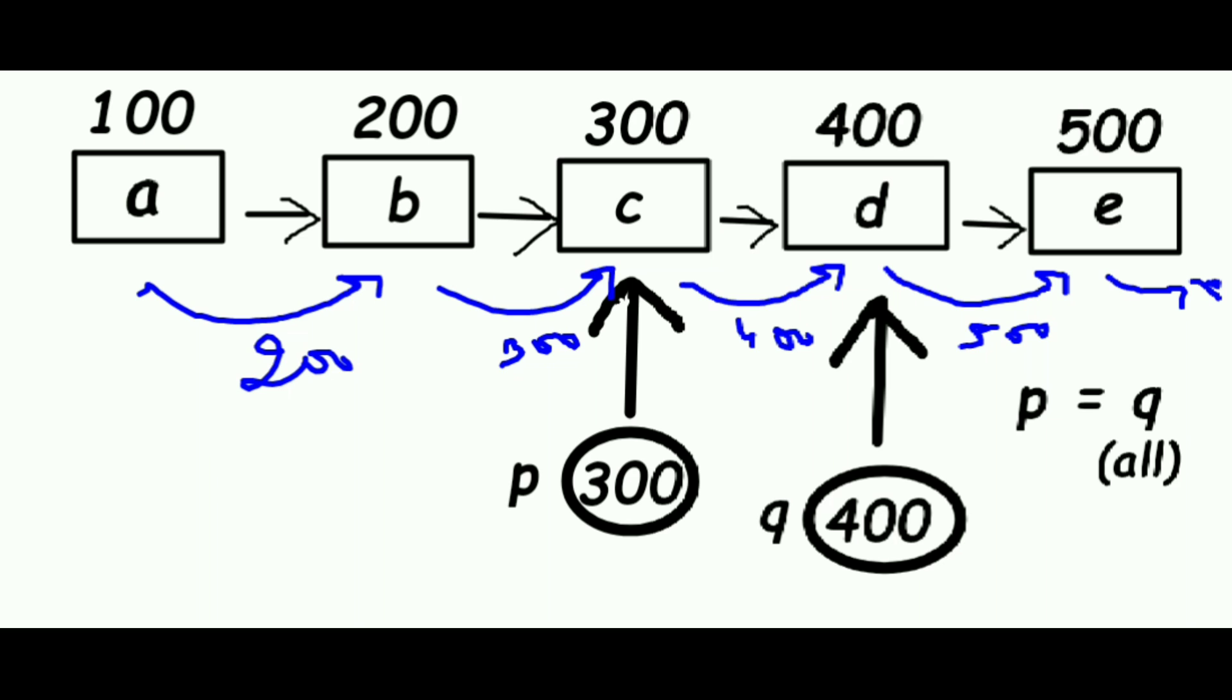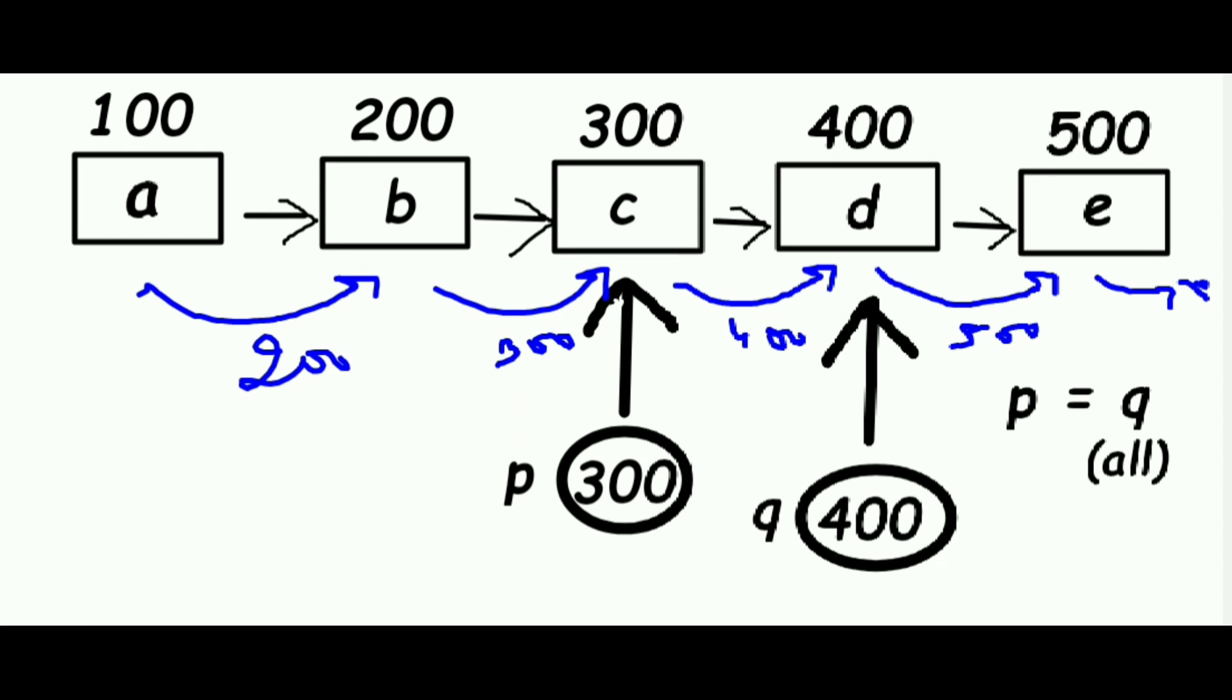Here I have taken P as a pointer which points to the node which we have to delete, which is C. Here Q is the pointer of the next node of C which we have to delete.